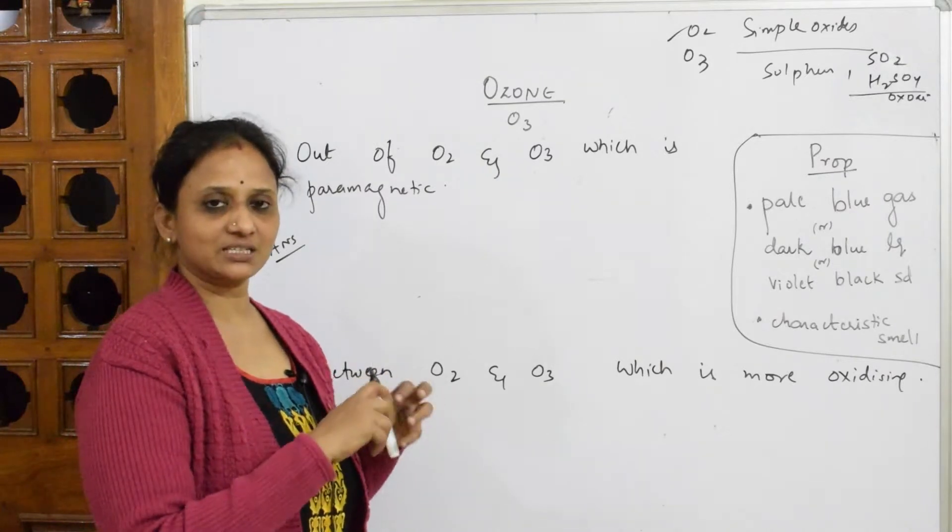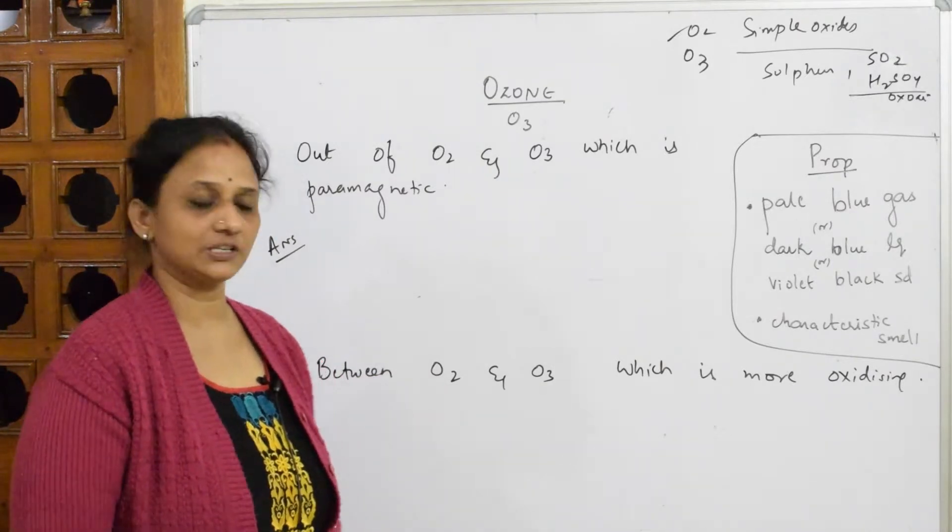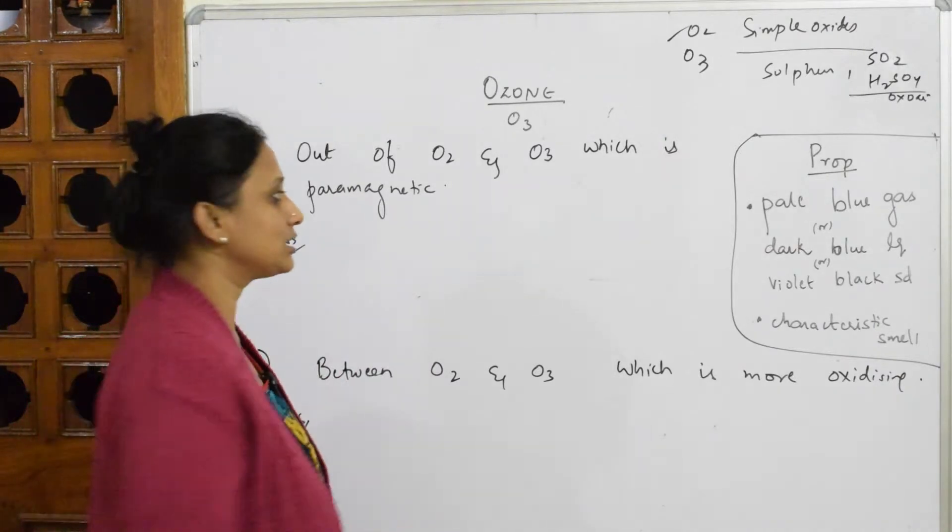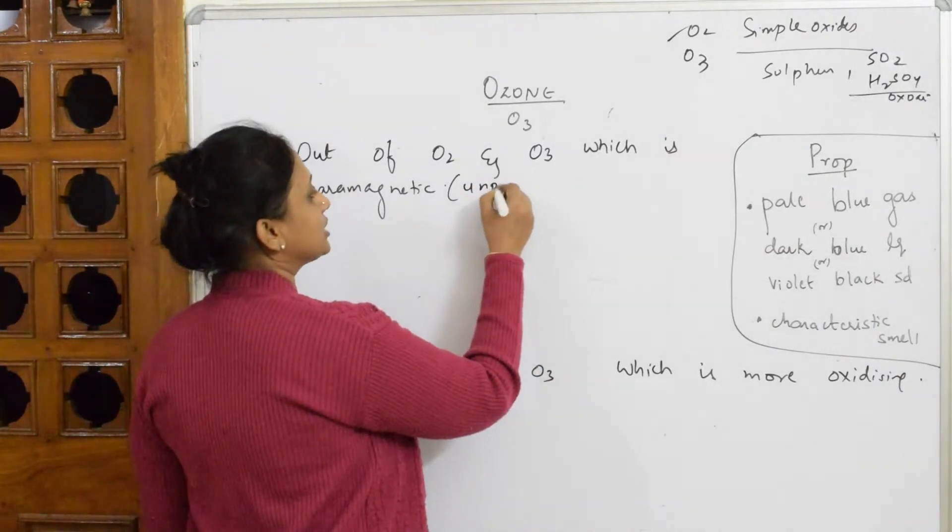And when I do the board papers, when I get this question, I'll try to show you the molecular orbital theory. Now, when I compare oxygen and ozone, which is paramagnetic? Paramagnetic means which has unpaired electrons.